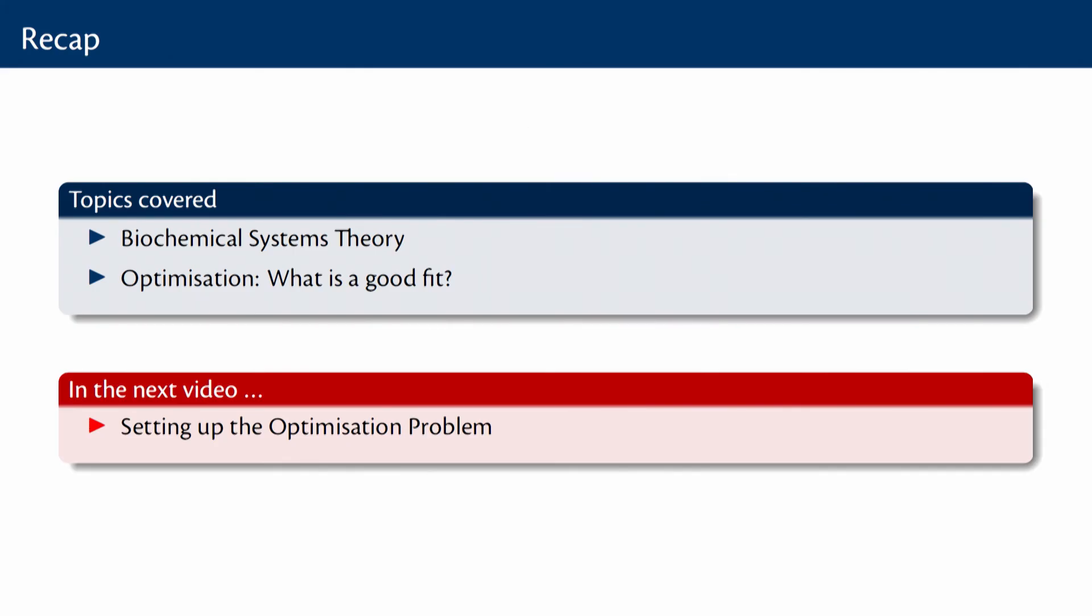So in this video, we had a brief overview of biochemical systems theory and we also studied various ways one can specify an optimization problem. Typically a good least square fit is a classic strategy. In the next video, we will continue to look at what are all the challenges in setting up a good optimization problem which helps us get good parameter estimates.